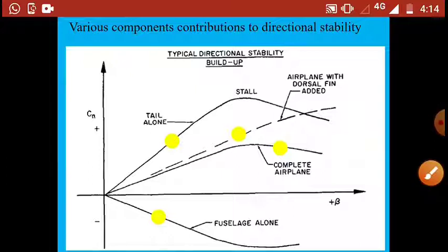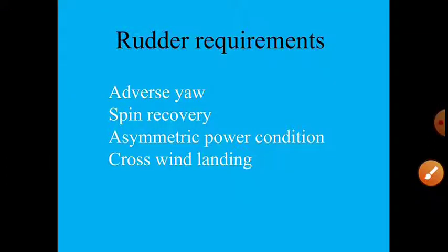Moving to the second part of the directional axis: directional stability and directional control. For directional control, the only topic in the syllabus is rudder requirements. We will look at the qualitative details of rudder design. There are four important things to keep in mind: adverse yaw, spin recovery, asymmetric power condition, and crosswind landing.